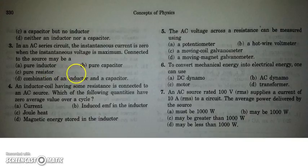So A, B and D are the correct answers. The next question is, an inductor coil having some resistance is connected to an AC source, which of the following quantities would have 0 average value over a cycle.